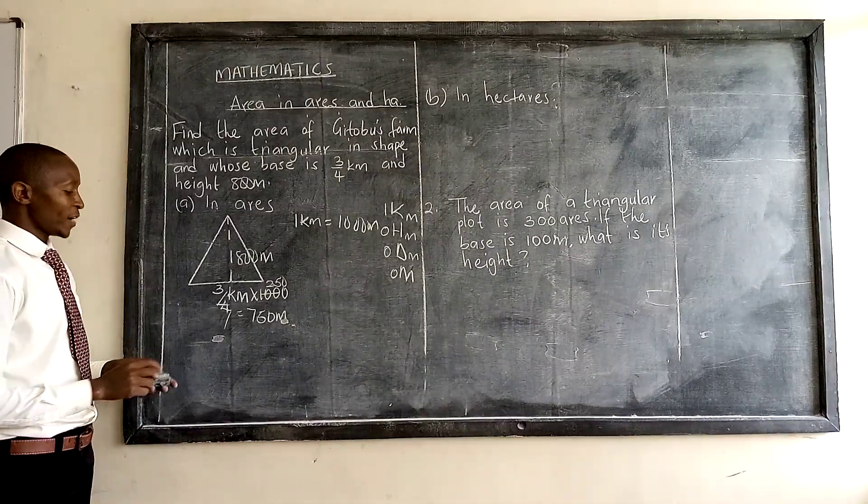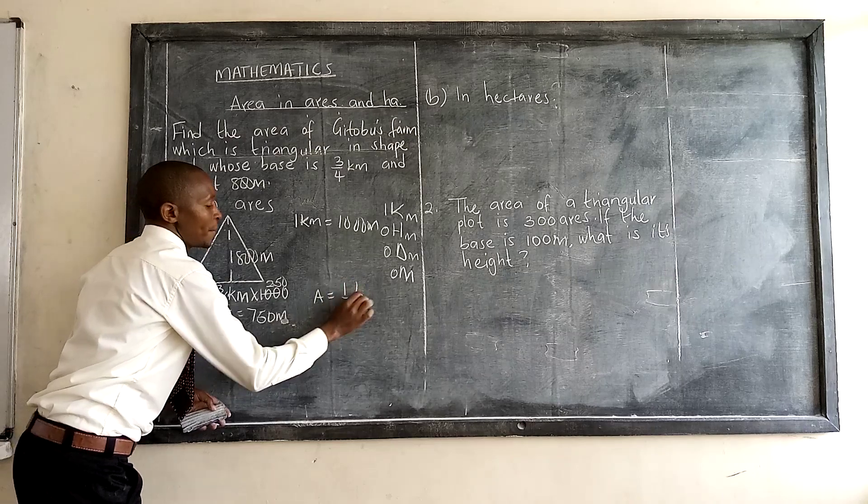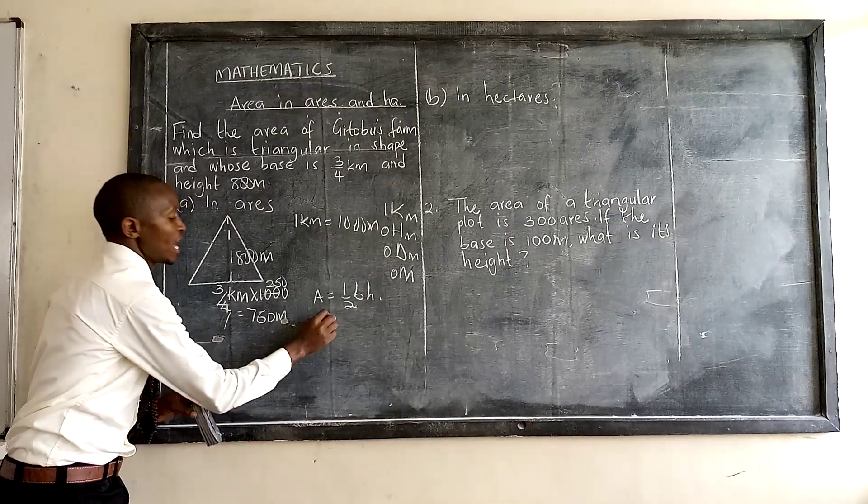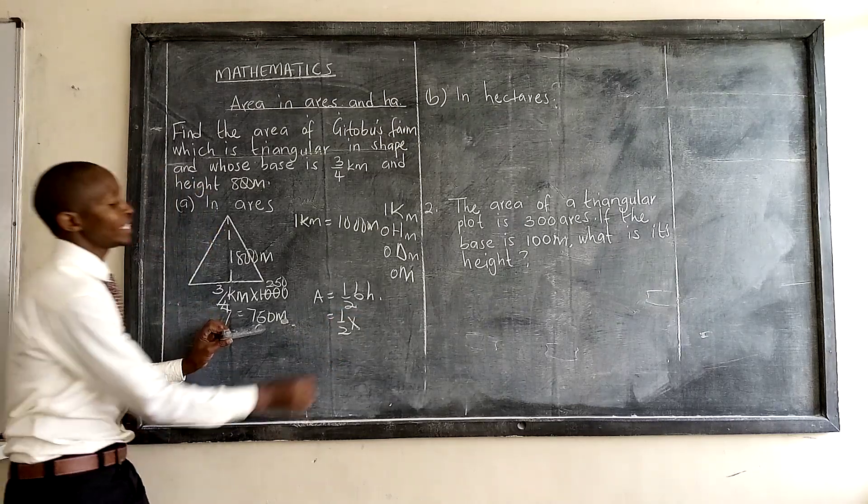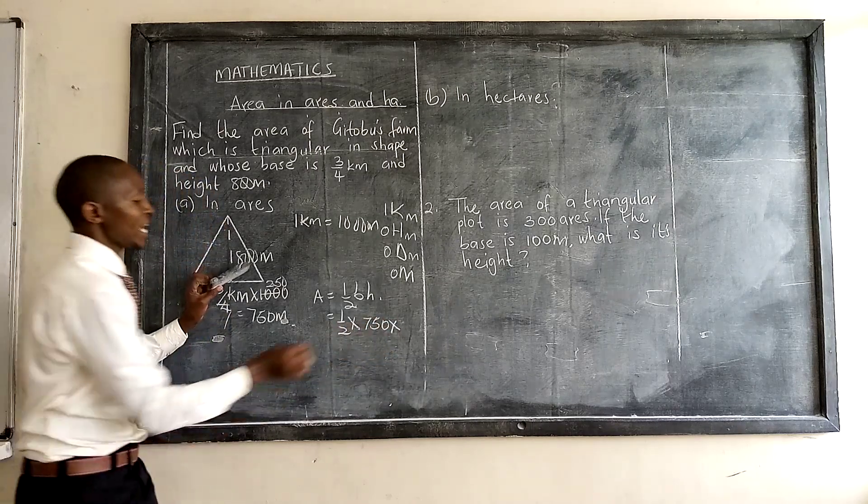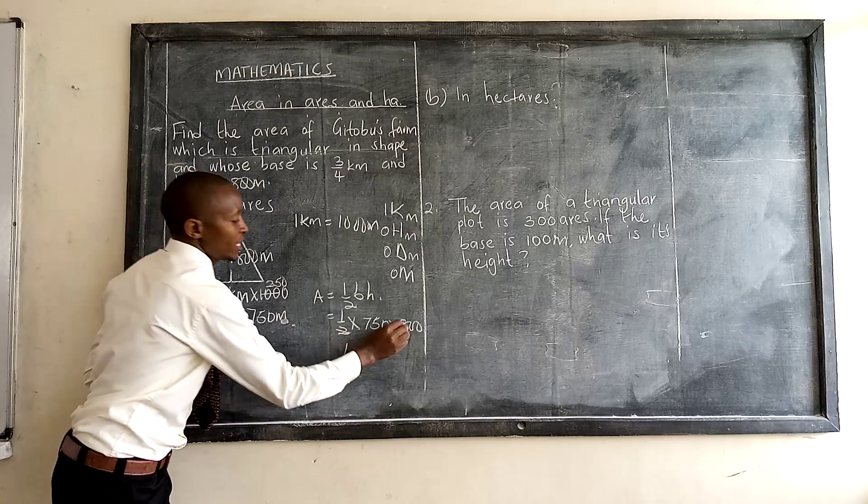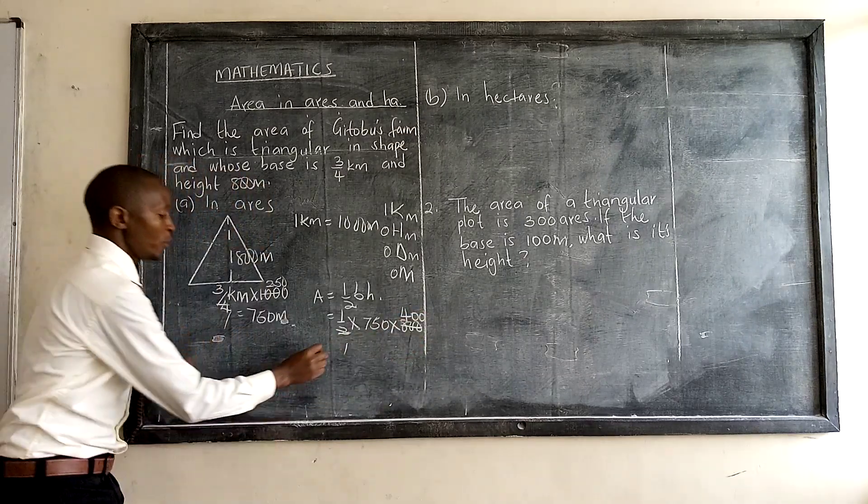Then the question is area in airs. How do you get the area of a triangle? Area is equal to a half base multiplied by the height. Then we have a half times our base, which is 750, and our height is 800.